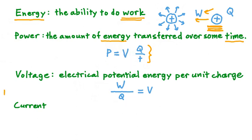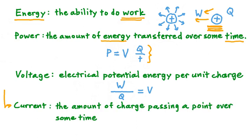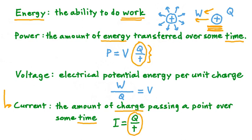Now having done that, let's move on to our last definition — the definition of current. Current is defined as the amount of electric charge passing a point over some amount of time. Writing this as an equation, current I is equal to charge Q divided by time T. This definition is quite useful, because notice up in our equation for power we have a Q divided by T term. In other words, we can replace that term with I, the current.